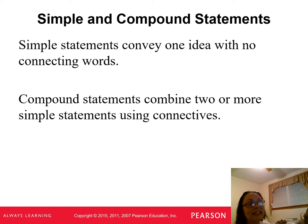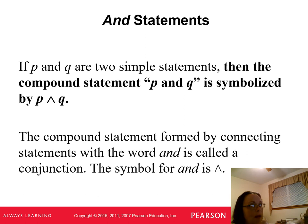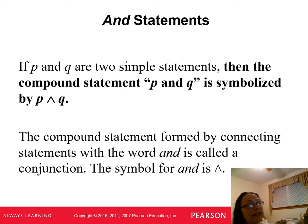Compound statements use two or more simple statements and connectives. Examples of connective words in math are just like connective words in English: and, or, if, then, if and only if. So if P and Q are two simple statements, then the compound statement P and Q is symbolized by P upside-down-V Q. The symbol for 'and' in logic is the upside-down V — we call that 'and.'